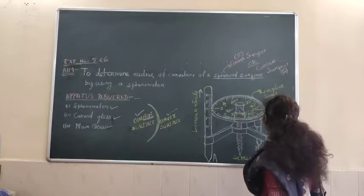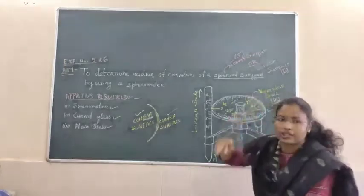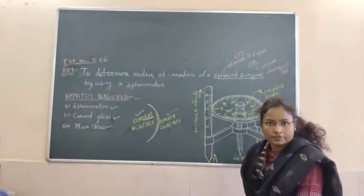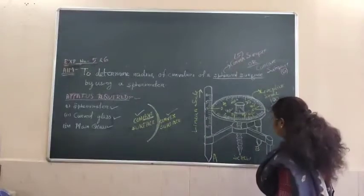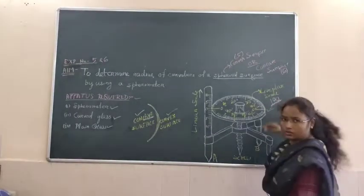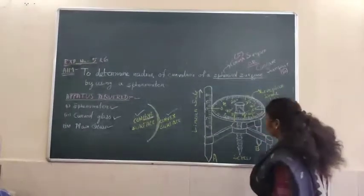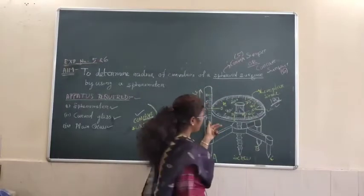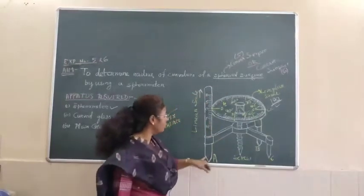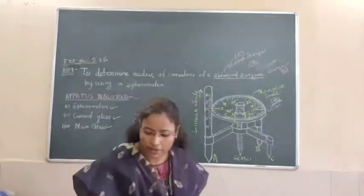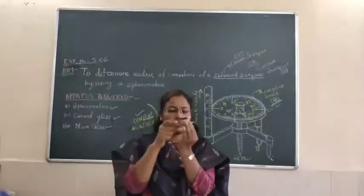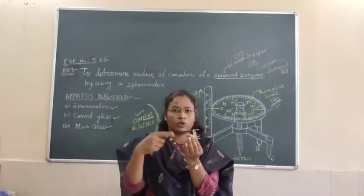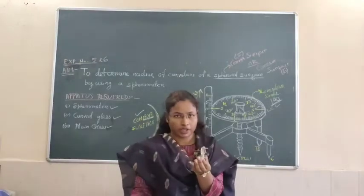These hundred divisions will be used when we calculate the pitch, and then the least count. We will use the total number of divisions for that. As you can see in this diagram, the apparatus has three feet. Here in this apparatus, this one is the screw, which we rotate to do the experiment.